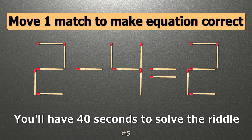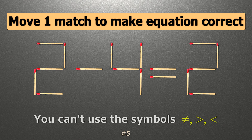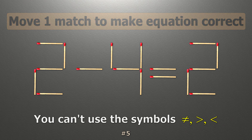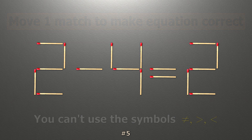We have the equality 2 minus 4 equals 2. Our equality is wrong. We need to move one match to make our equality correct.